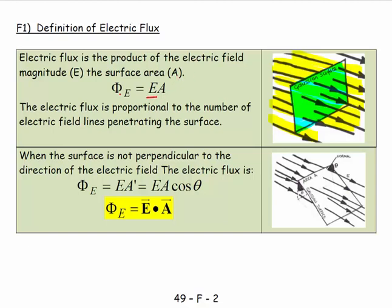So literally, if you double the field, you get twice as many arrows. If you double the area, you get twice as many arrows. If you double both, you get four times as many arrows. It's a simple measure, a way of keeping track.